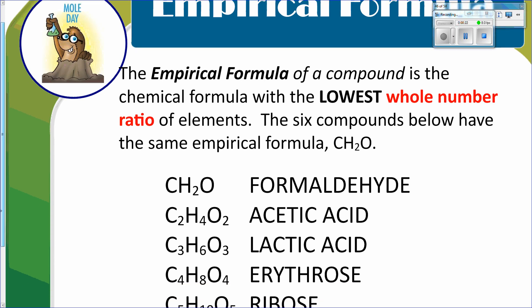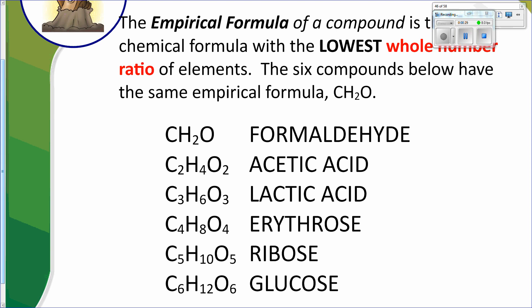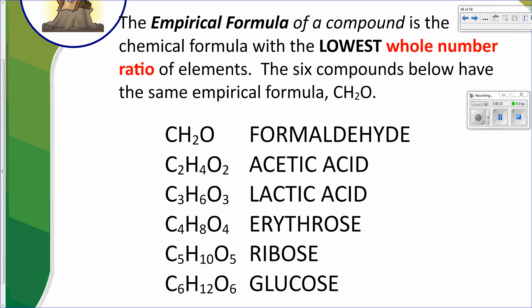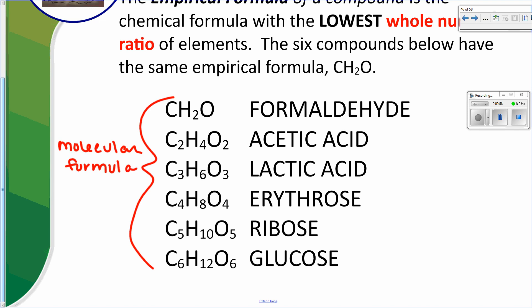So what is empirical and molecular formula? The empirical formula is the chemical formula with the lowest whole number ratio of elements. The six compounds below have the same empirical formula — they all are CH₂O. These are all molecular formulas, which means these are the true formulas for these particular compounds and this is what you're going to find in nature. Acetic acid is always going to be in a ratio of C₂H₄O₂, meaning there are two carbons, four hydrogens, and two oxygens. However, if you were to reduce that down to the lowest whole number ratio, you would get CH₂O.